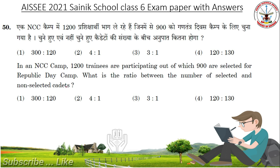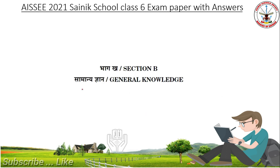In an NCC camp, 1200 trainees are participating out of which 900 are selected for a public day camp. What is the ratio between the number of selected and non-selected cadets? Answer is 3 is to 1.